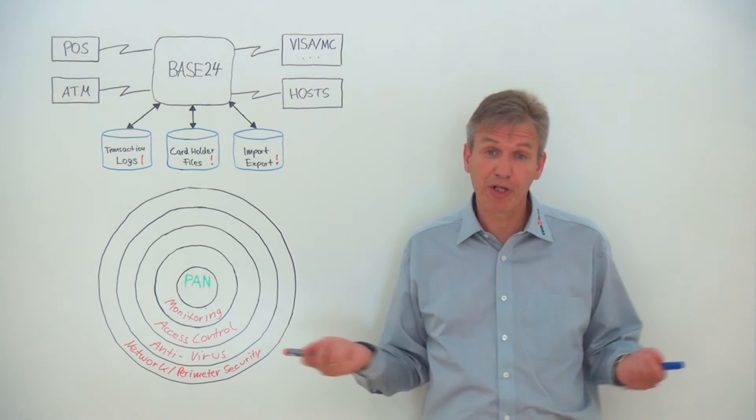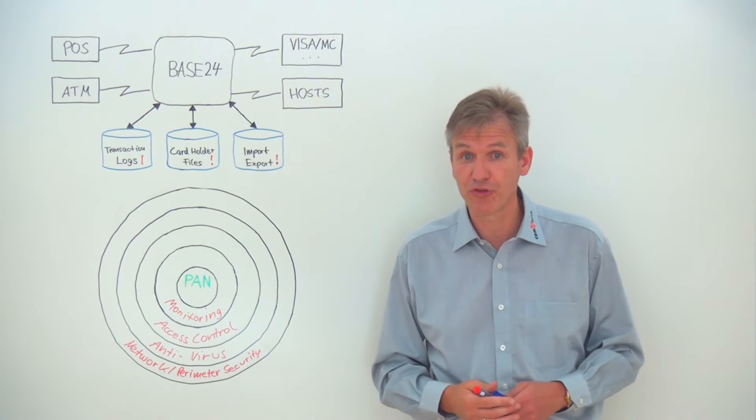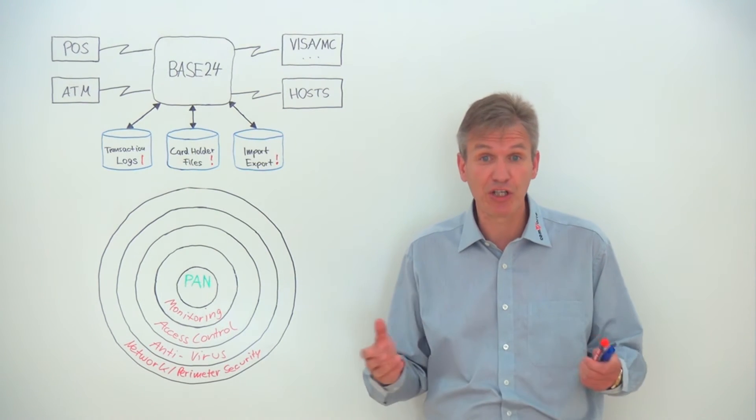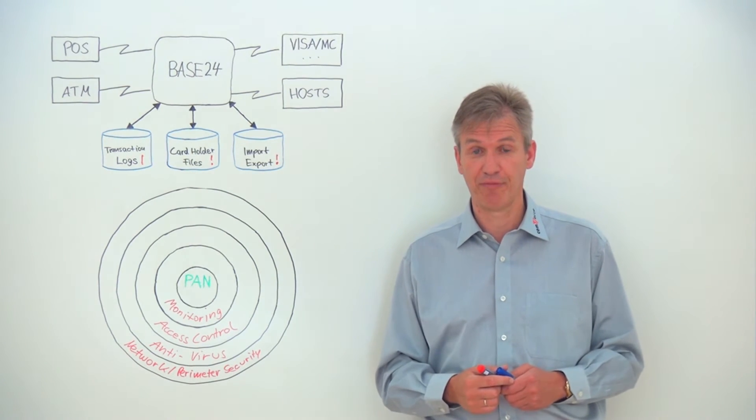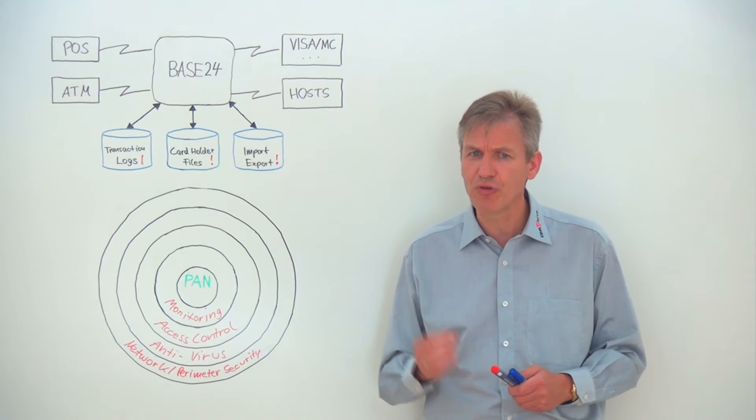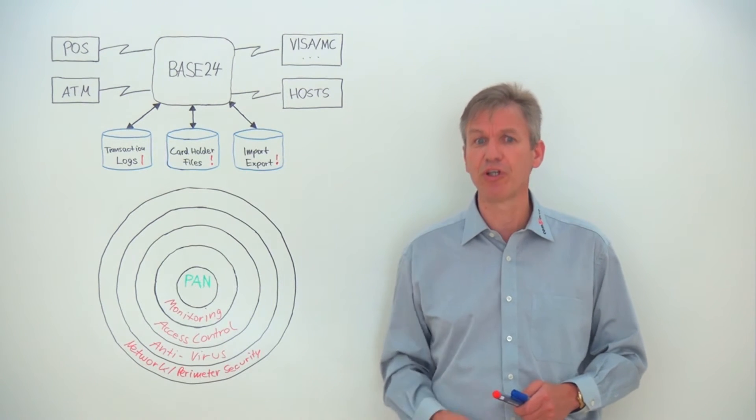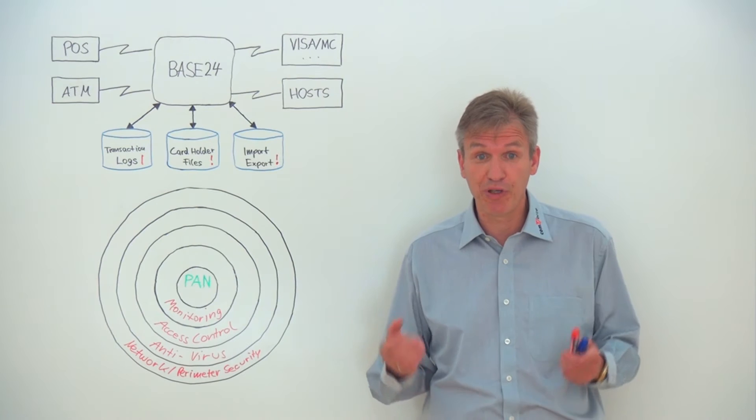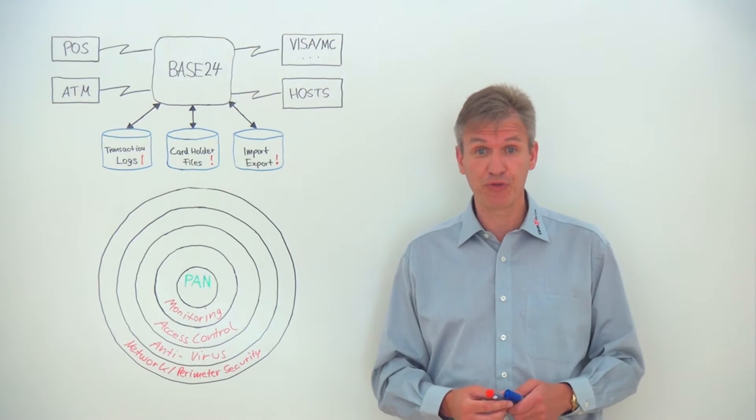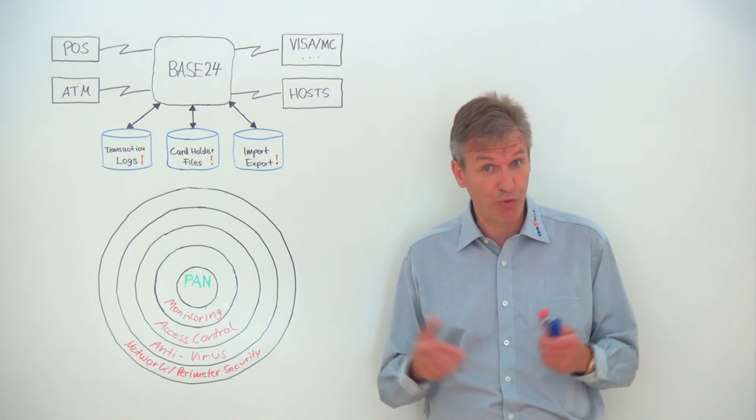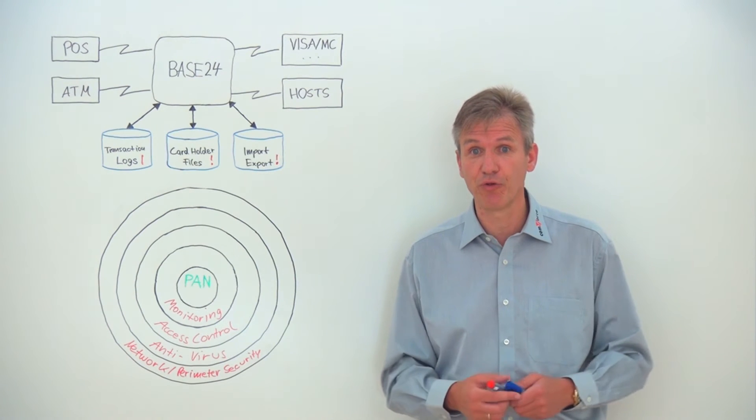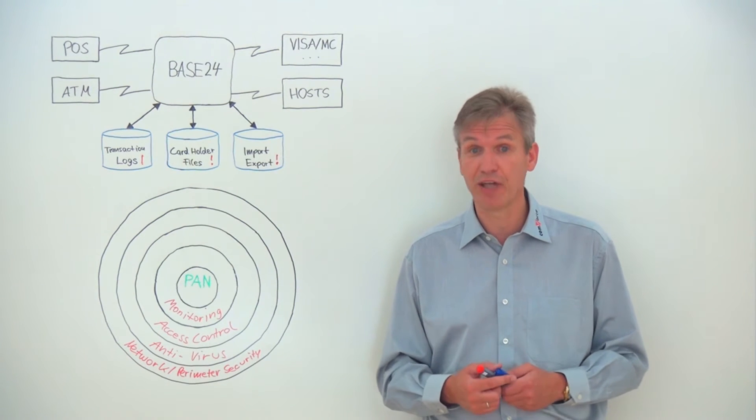Note that a typical Base24 system processes and stores a massive amount of PANs, potentially millions on a single day. Any malicious access to these files would be absolutely disastrous. It would be very expensive in post-incident handling. It will probably get you on the front page of the newspapers and massively damage your brand.